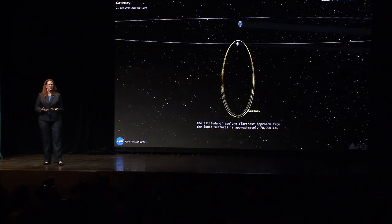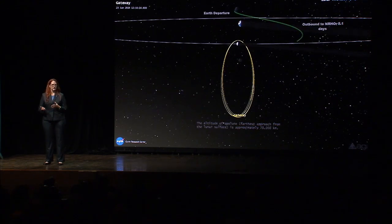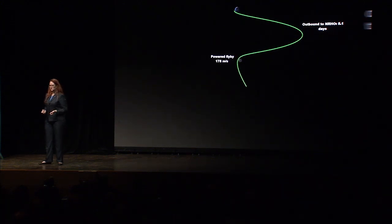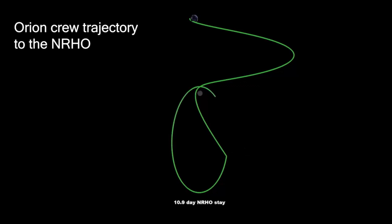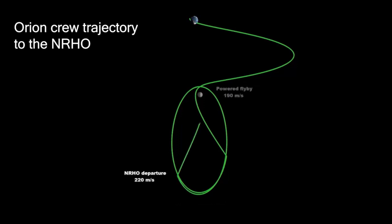Near-rectilinear halo orbits are very favorable for transferring into and out of, which is nice when your spacecraft is meant to be a staging area for exploration, with other ships coming and going. This trajectory animation shows the path that the Orion, with the crew in it, would take as they depart Earth, head toward a powered lunar flyby to put them into the Gateway in the NRHO, stay in the NRHO for one and a half orbits, before departing to head back via another powered lunar flyby to put them on the trajectory that would take them back home.